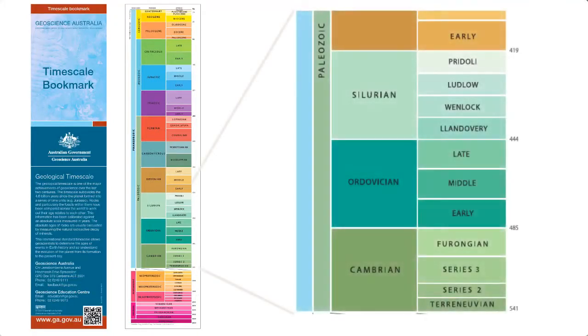Before we could add any absolute dates to the geological timescale, we actually had a relative timescale. We had rocks from all these different time periods and we had them in order. So how exactly did we go about adding absolute ages to this relative timescale?